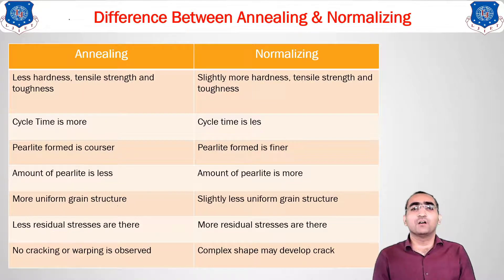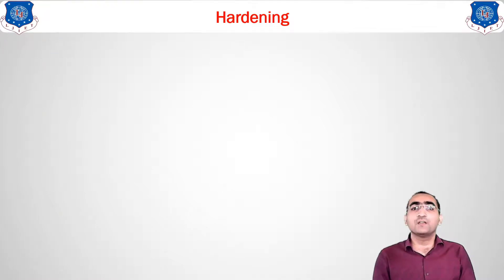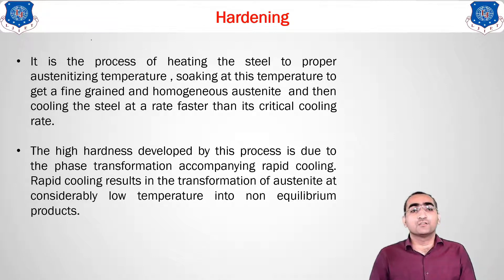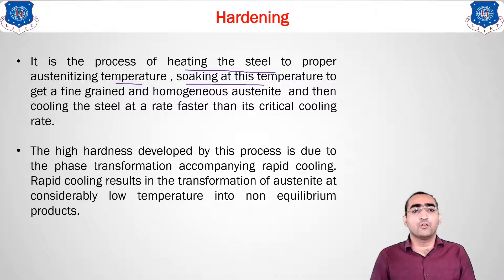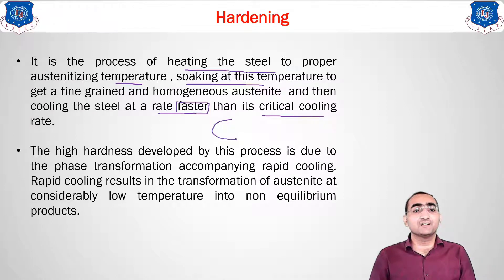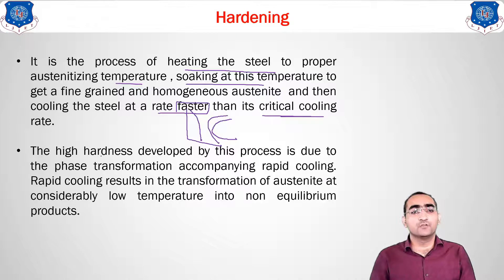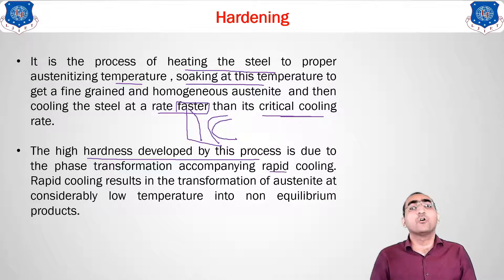Now let us move to the third method: hardening. It is the process of heating the steel to a proper austenitizing temperature, soaking the material at that temperature for an appropriate time, and then going for faster cooling — faster than the critical rate. In the TTT diagram you have the C-curve structure, and you must always pass your material through without crossing this C-mark. The faster the cooling, the higher the hardness developed by this process.